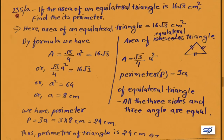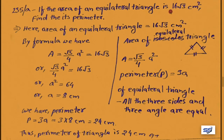Problem 235(a): If the area of an equilateral triangle is 16 root 3 centimeter square, find its perimeter. Equilateral triangle means every side is equal — sides A, B, C are all equal. Area of equilateral triangle is given as 16 root 3 cm². We need to find the perimeter of the same triangle. By formula, area A equals root 3 upon 4 times a squared, so we set root 3 upon 4 times a squared equal to 16 root 3.